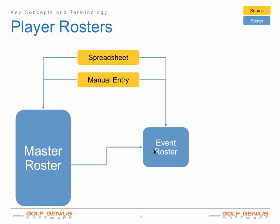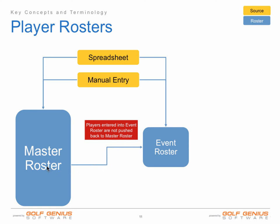So you'll see looking at this diagram, there are three different ways to enter players into your event roster: spreadsheet, manual entry, and by importing from your master roster. Players entered into an event roster are not pushed back into the master roster. As you'll see, this arrow only goes left to right — it does not go from event roster to master roster. The reason for that is we do not want to muddle up your master roster with players from many different events, specifically events that don't hold your members, such as guests coming from your club. You obviously don't want these guests in your master roster.